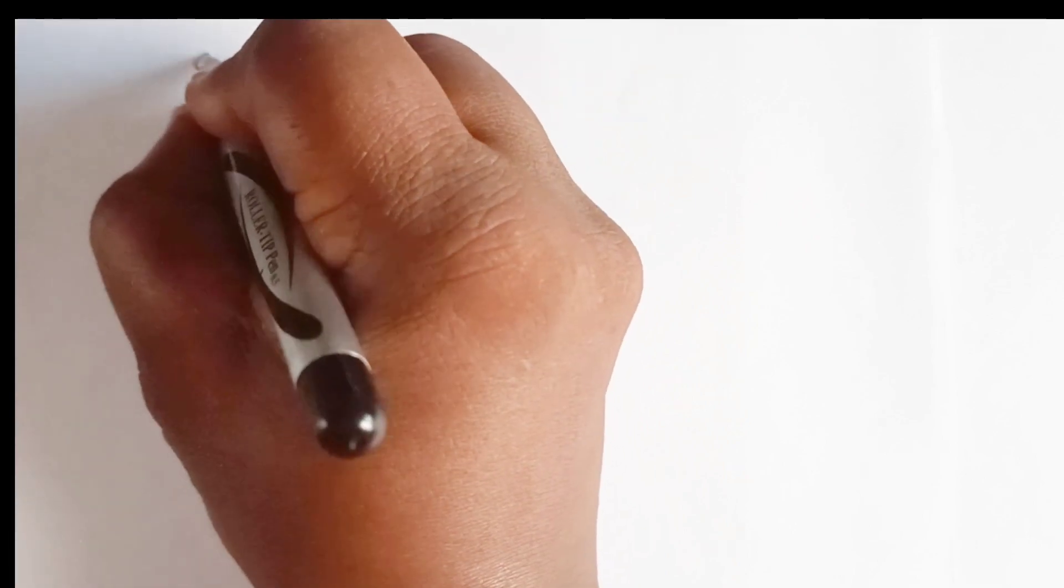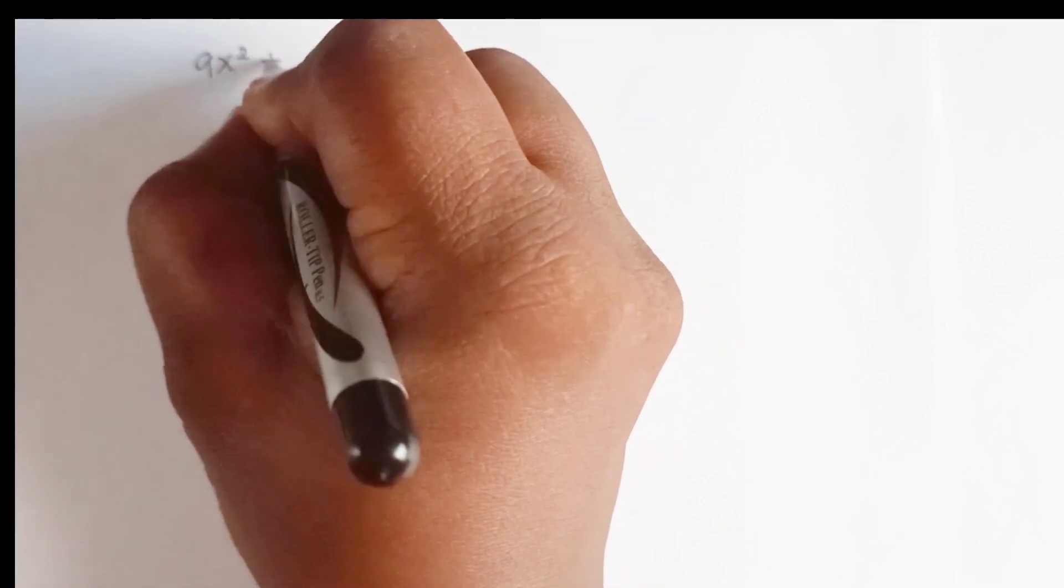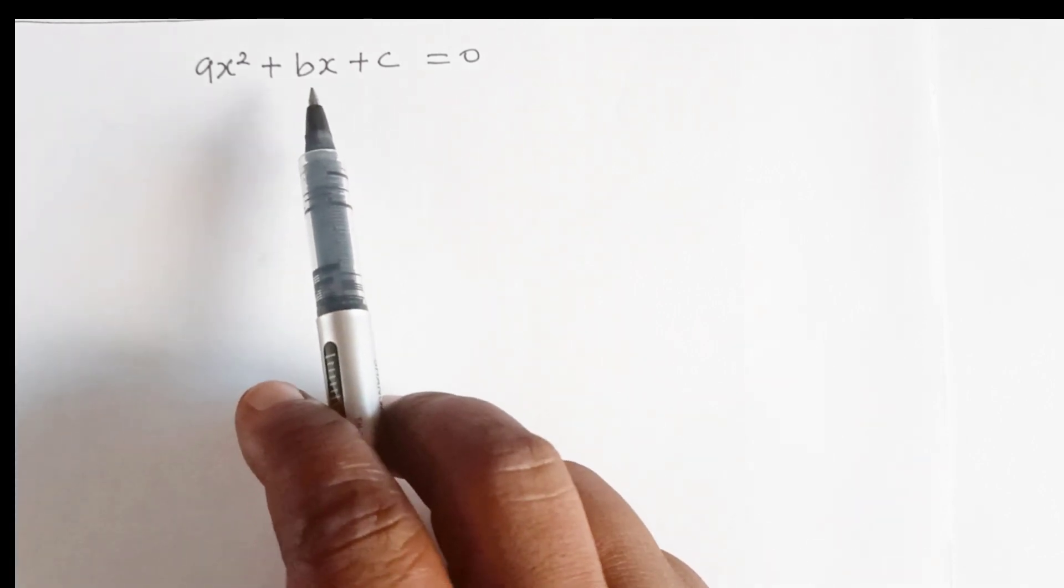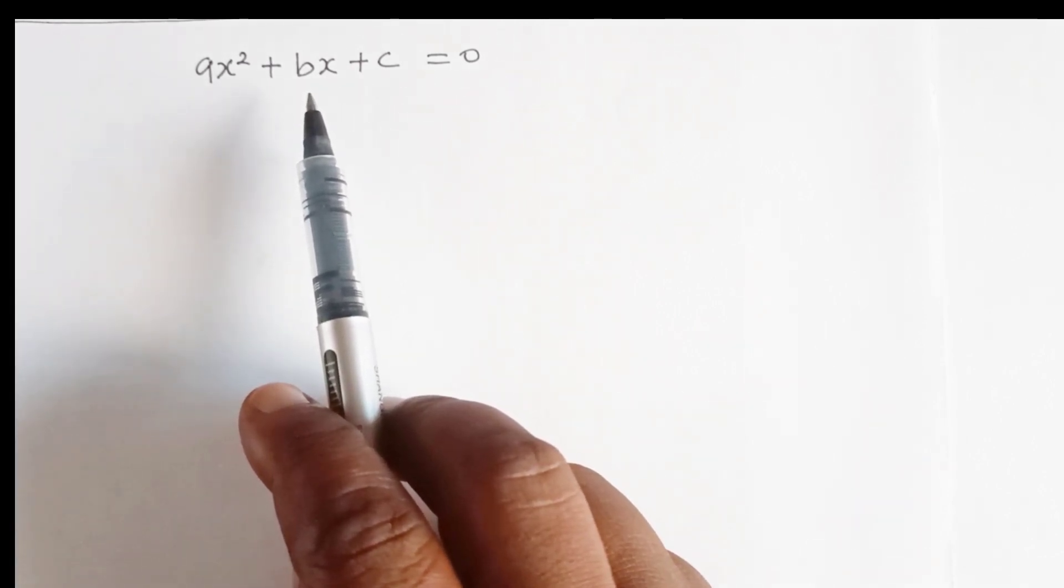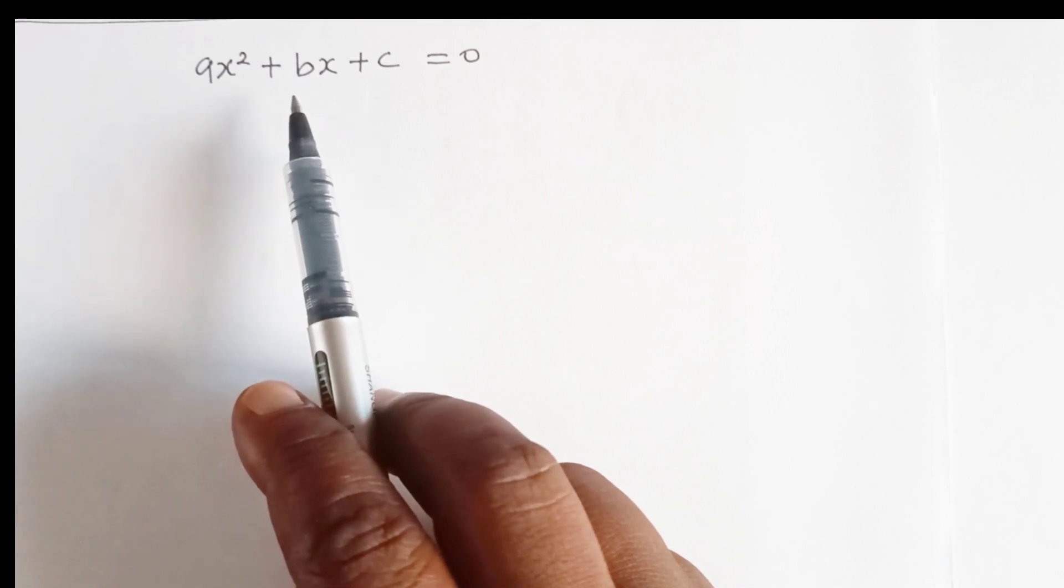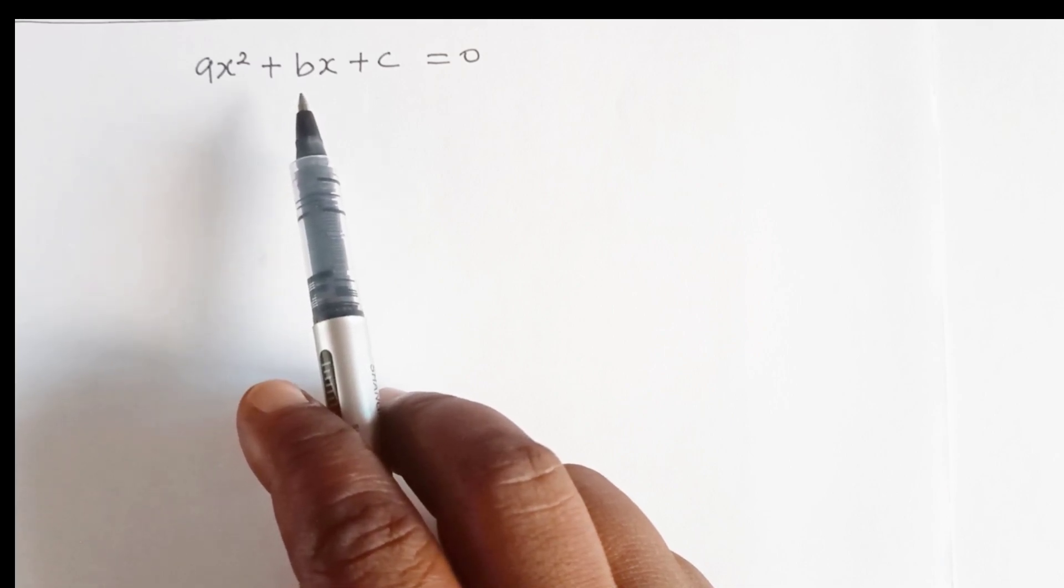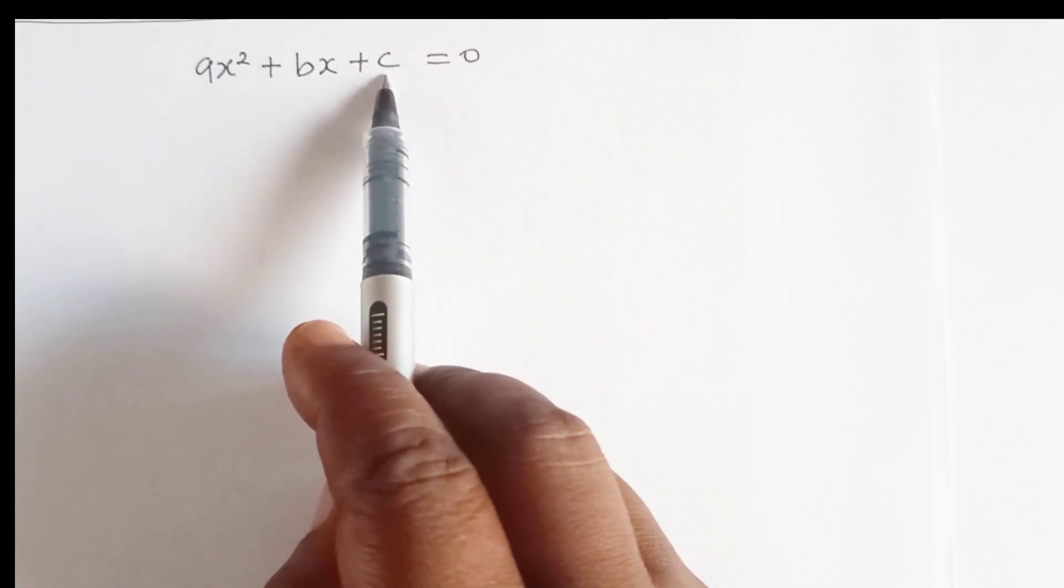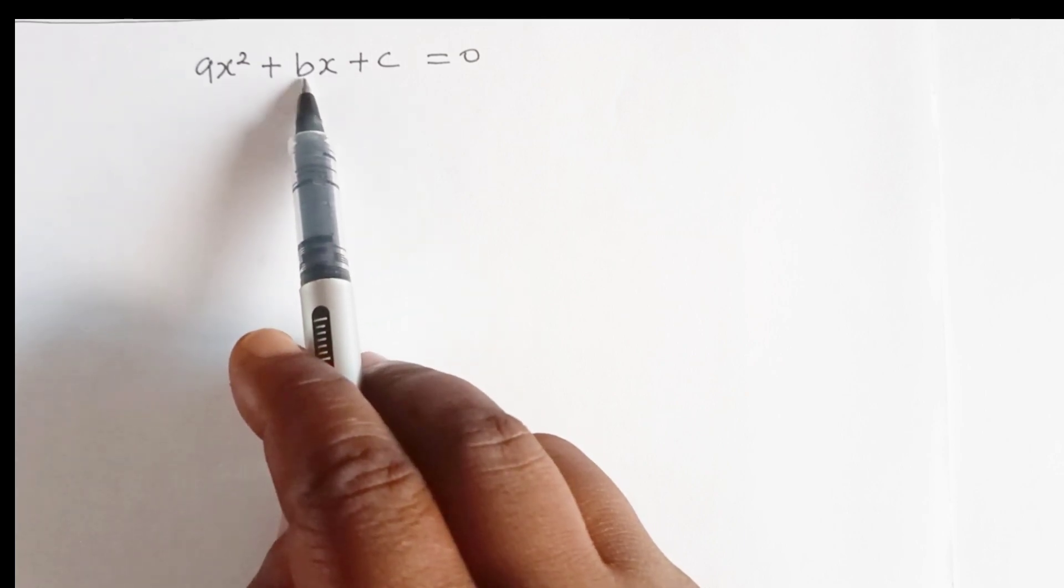Consider the quadratic equation ax squared plus bx plus c equal to zero. To solve this equation by factorization, the first step is to find two numbers such that their product is equal to ac and their sum is equal to b.